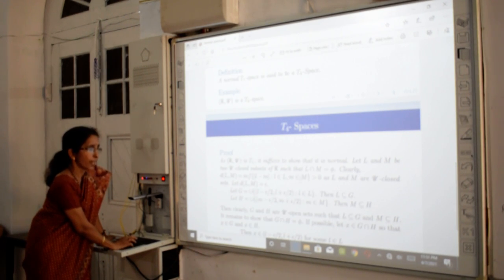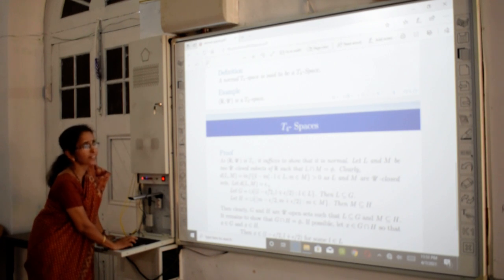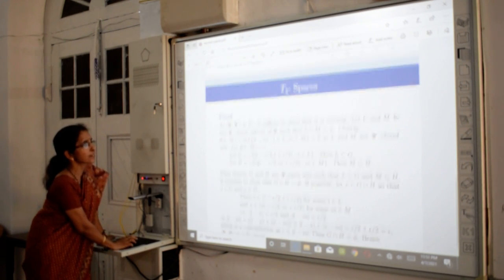And so, we cannot find any sequence in L which converges to M. Similarly, we cannot find any sequence in M which converges to L. So, when we find the minimum, this is always positive. So, the distance of L and M is epsilon and clearly epsilon is positive.